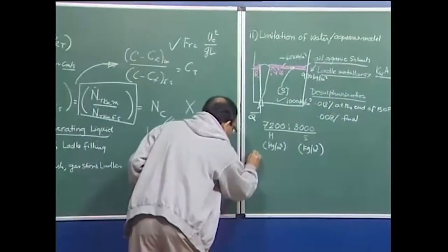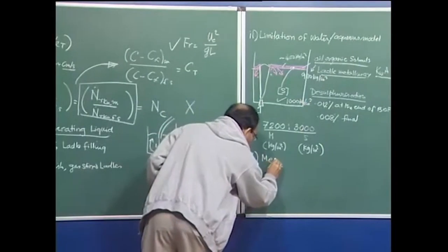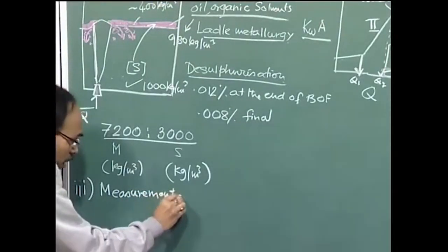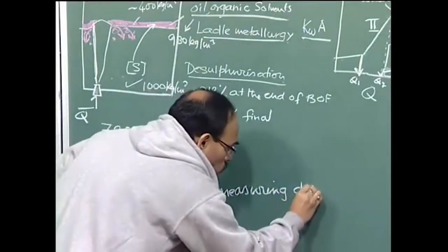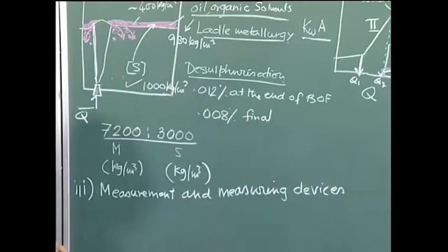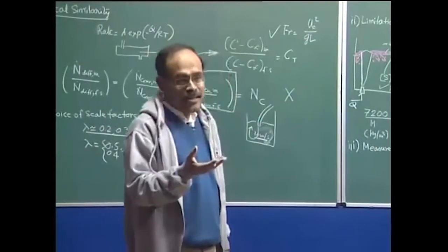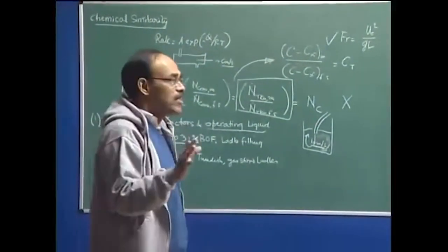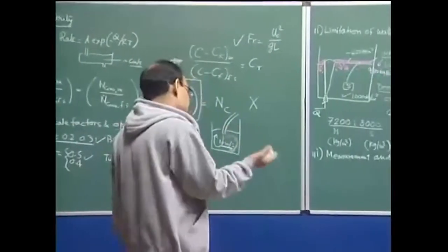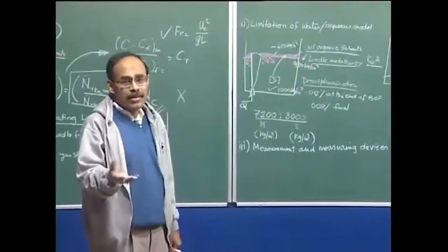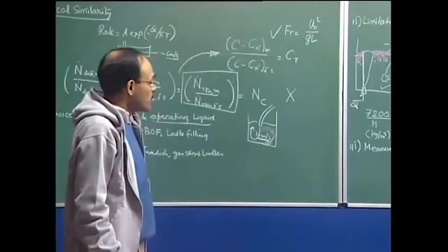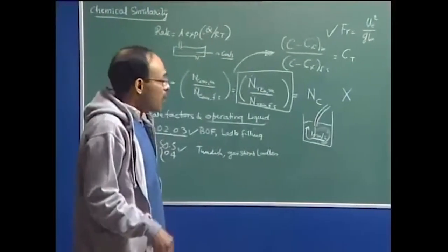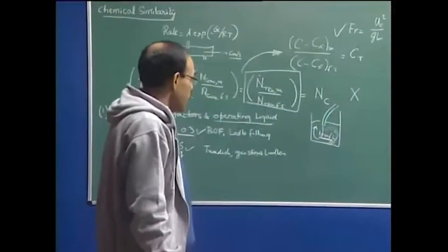Measurements and measuring devices are a very important part of modeling. Models and measurements are like friends — without companion measurements, no model study is accurate or can give meaningful information, because we do not know whether the models are correct. The models generate numbers, and we have to physically verify those numbers with measurements. Modeling and measurements are true companions of an accurate and realistic investigation.